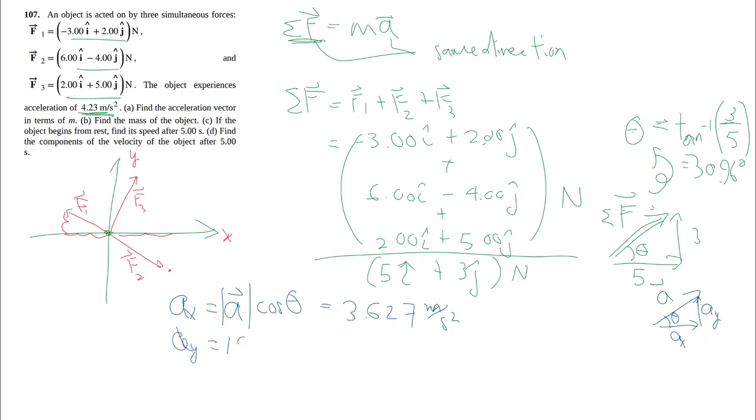a_y similarly, but with sine theta gives us that. Packaging it together, the entire acceleration vector is then the x component, we'll keep three sig figs, and don't forget the units, meters per second squared.